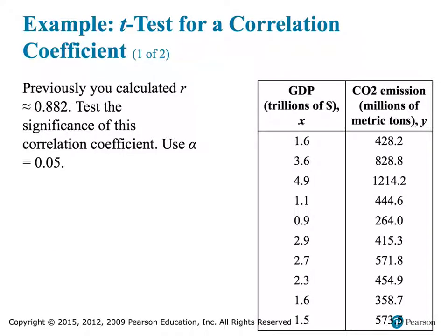We previously looked at data comparing gross domestic product and carbon dioxide emissions and calculated a correlation coefficient R equal to 0.882. We want to test the significance of this correlation coefficient using an alpha level of 0.05.